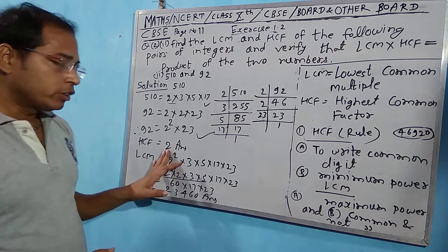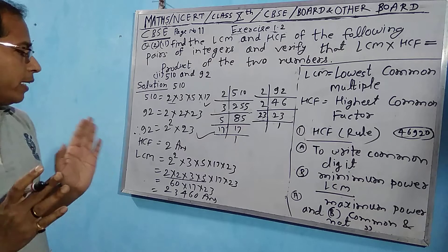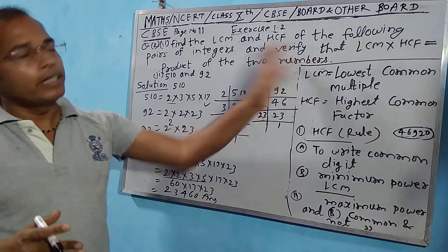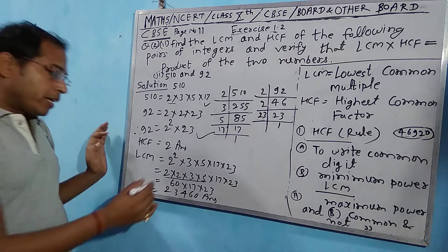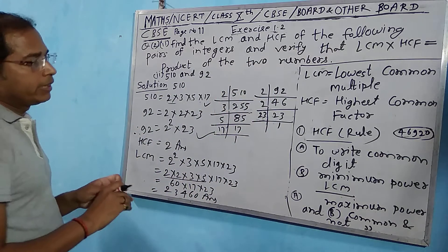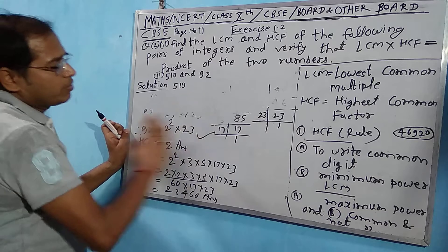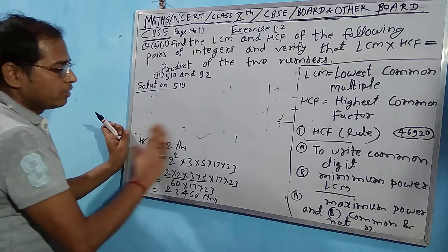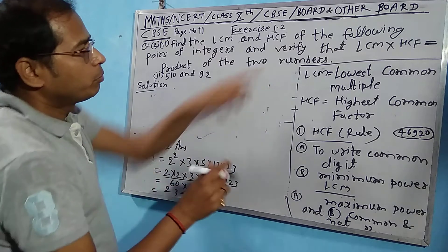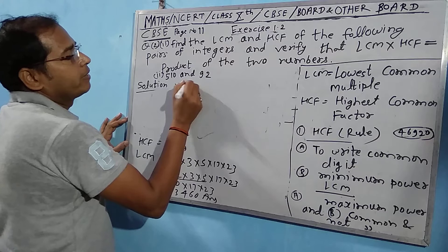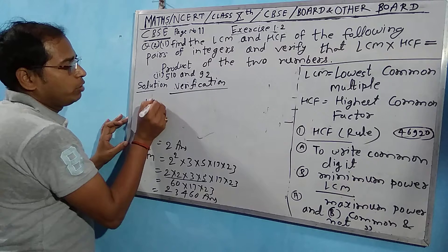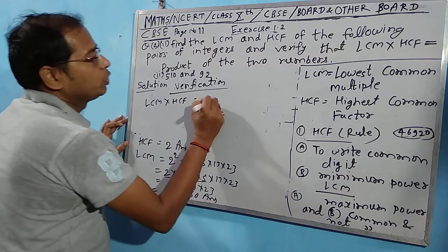So LCM = 23,460 and HCF = 2. Now for verification: in an examination, if asked to verify, first write the formula. The formula is: LCM × HCF = product of the two numbers. So we write the verification: LCM × HCF = product of the two numbers.